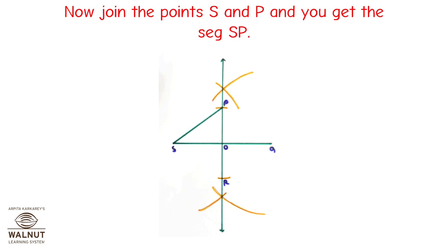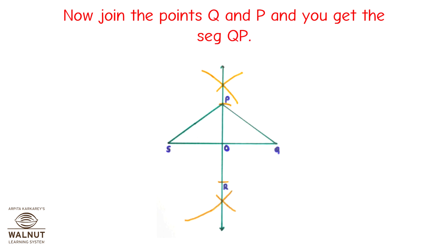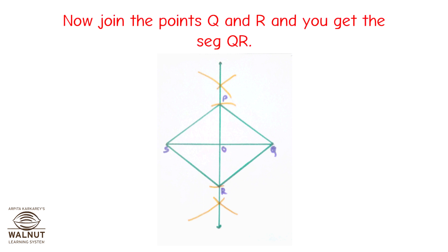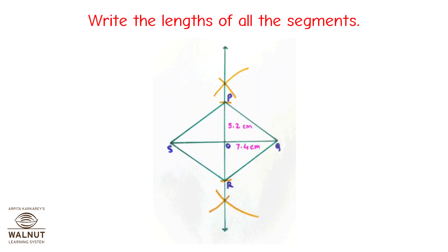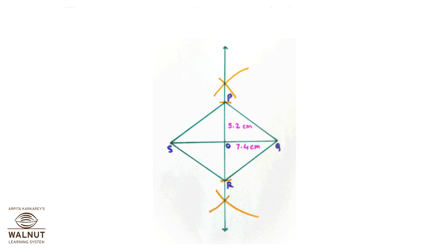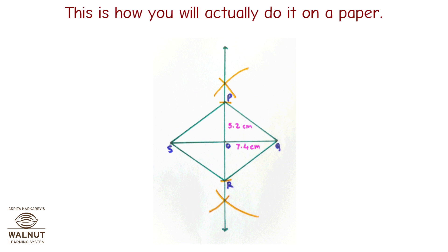Now join the points S and P to get segment SP. Now join the points Q and P to get segment QP. Now join the points Q and R to get segment QR. Write the lengths of all the segments. PQRS is the required rhombus. This is how you will actually do it on paper.